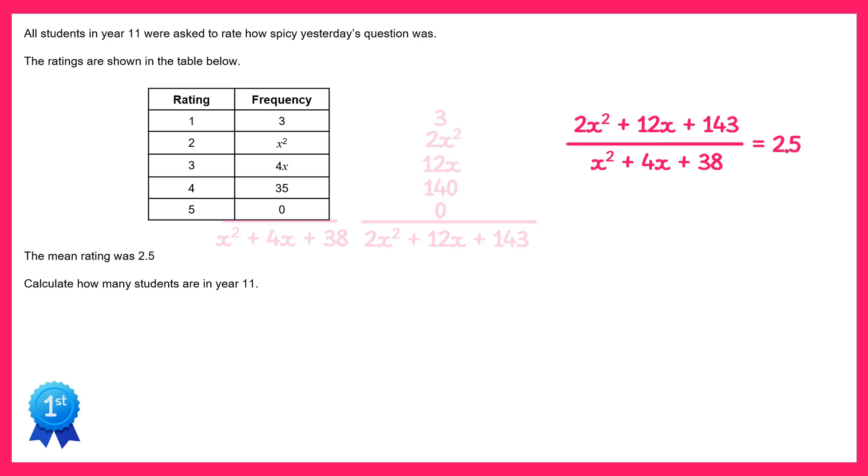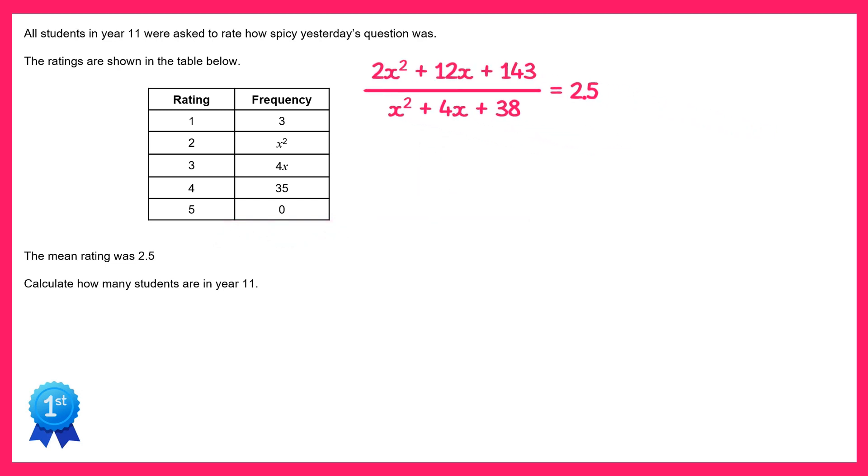So we just have this equation to solve. I'm going to multiply both sides by the quadratic on the bottom of the left fraction, so I'll end up with 2x squared plus 12x plus 143 equals 2.5 lots of the quadratic which was x squared plus 4x plus 38.